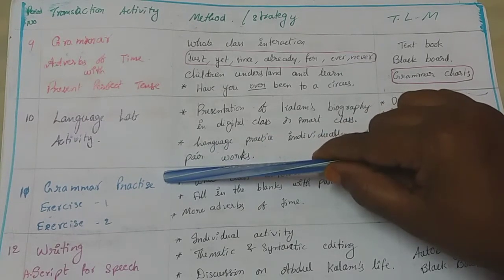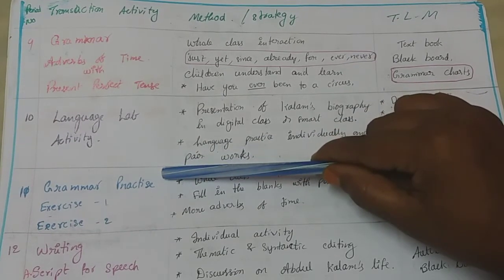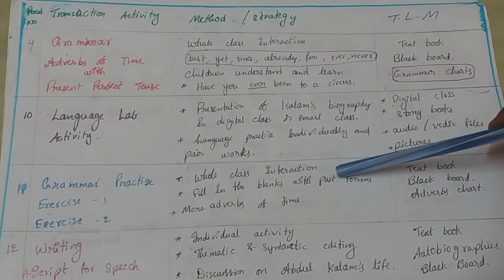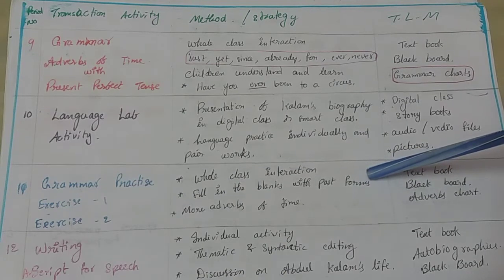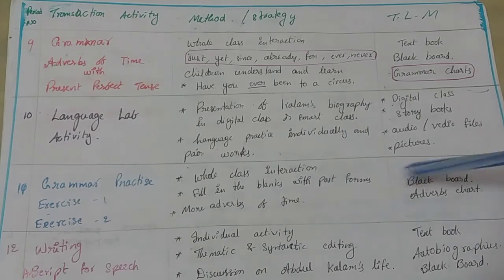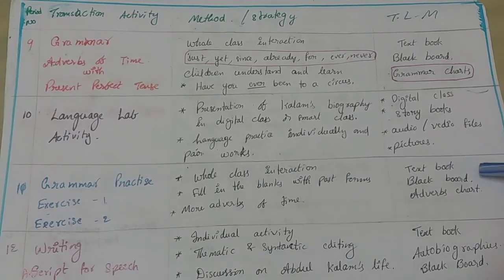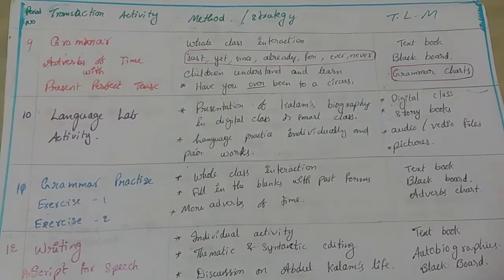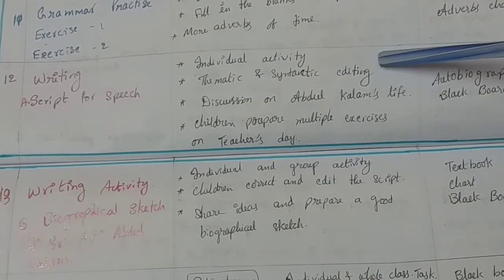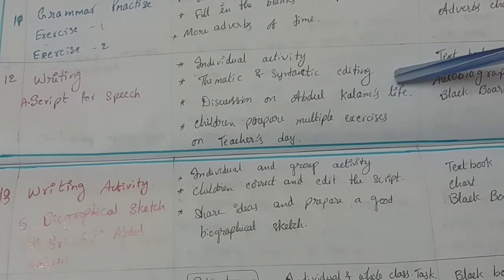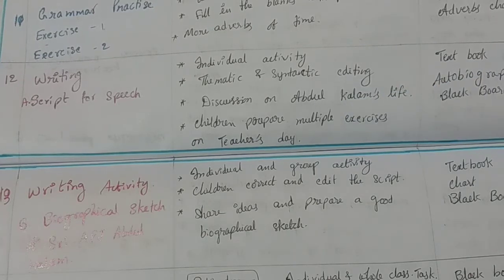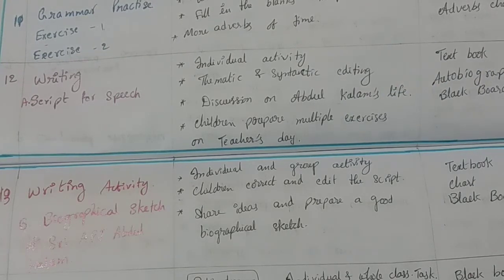In period 11, we give grammar practice exercises 1 and 2 in a whole class interaction — fill in the blanks with past forms and more adverbs of time. In period 12, we do writing: a script for a speech, with thematic and syntactic editing, discussion on Abdul Kalam's life. Children prepare multiple exercises for Teacher's Day. TLM: textbook, autobiographies, blackboard, etc.